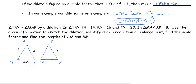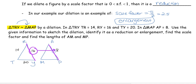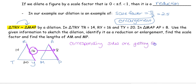Whether it's a reduction or enlargement depends on your similarity statement. The original is TRI and we're dilating it to MAP. To determine if it got bigger or smaller, we look at corresponding sides: RY and AP are corresponding. Going from 16 to 8, we are getting smaller. Therefore, because corresponding sides are getting smaller, this is going to be a reduction.